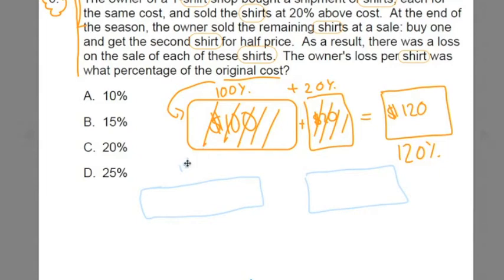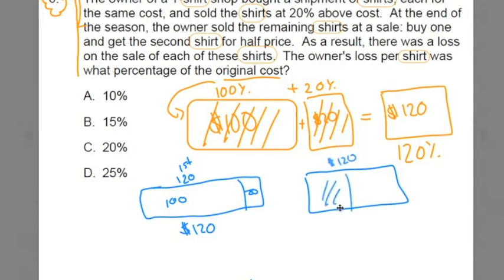The first, they're getting the full 120%, that $100 plus the $20, so they're selling this first one for $120. The second one, they're only getting half that, because it's 50% off 120, so that means they're only getting $60. So with both sales of these two shirts, the owner makes $180. And the average price per shirt, 180 divided by 2, gets you $90.